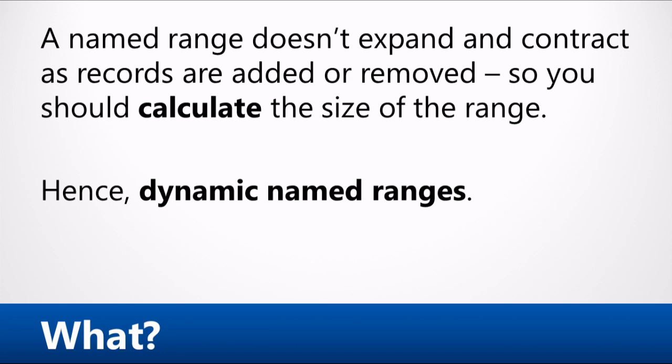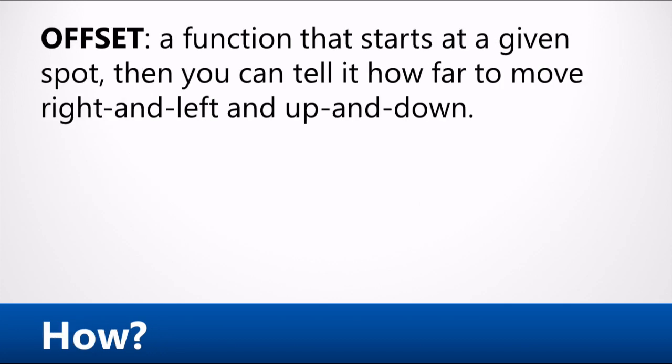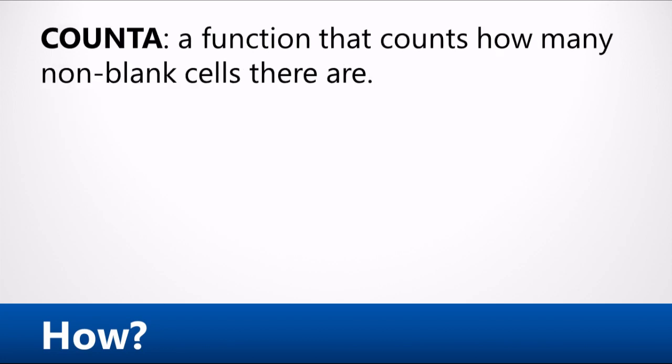To do this, we use two functions. The first is the OFFSET function. The concept is that the OFFSET function starts off with a cell, and then we tell it to move up and down, left and right, and to grow and shrink up and down, left and right. As we do that, it expands and contracts to become a different reference. In order to tell it how to grow and shrink, we're going to use a function called COUNTA. The COUNTA function tells you how many non-blank cells there are in a given range.